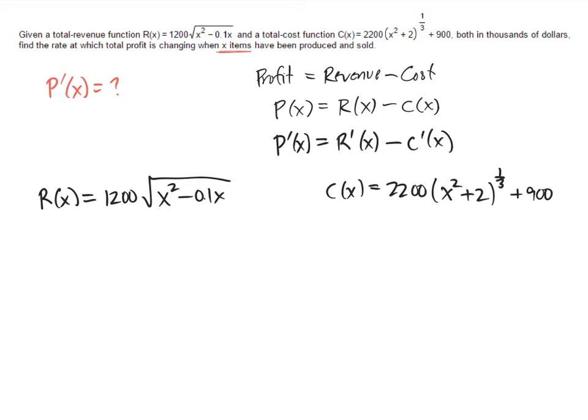So let's start with r of x. We want to find r prime, so the first thing we're going to have to do is rewrite that square root using a fractional exponent. So that's going to be x squared minus 0.1x, all raised to the 1/2 power. Remember, square roots get rewritten as 1/2 exponent.